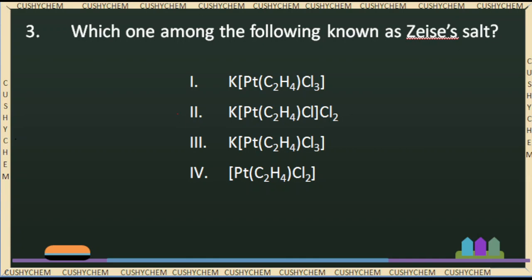Question number 3: Which one among the following is known as Zeise's salt? Zeise's salt is potassium trichloro ethylene platinate(II). This salt has a speciality — it was the first identified organo-metallic compound, a carbon-metal compound involving transition metals. It is named after William Christopher Zeise.